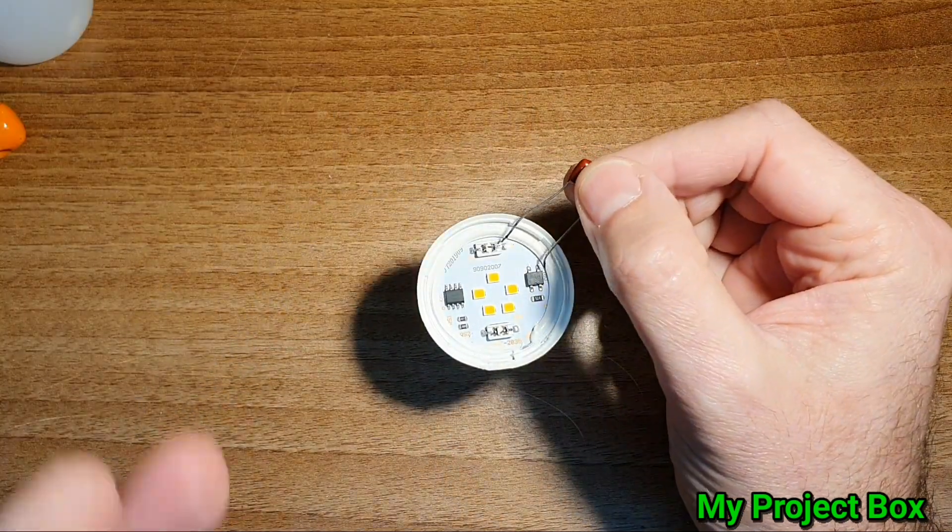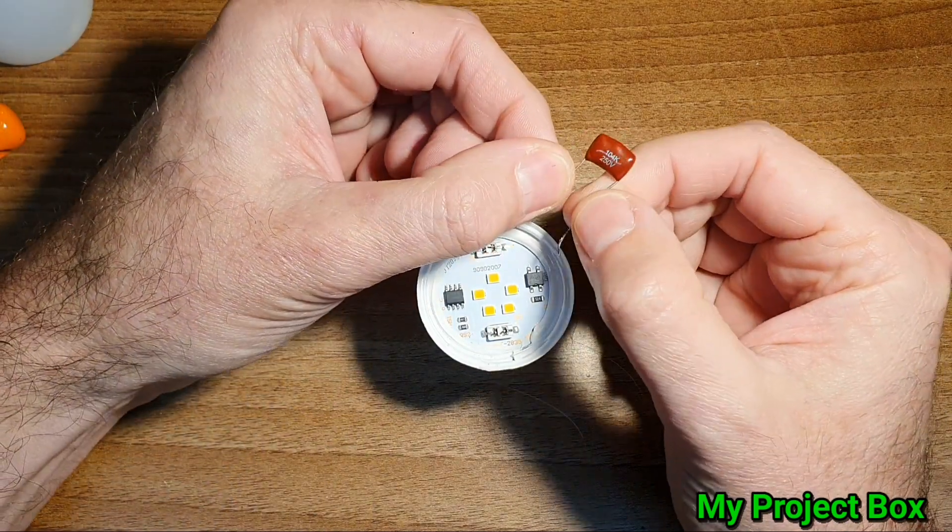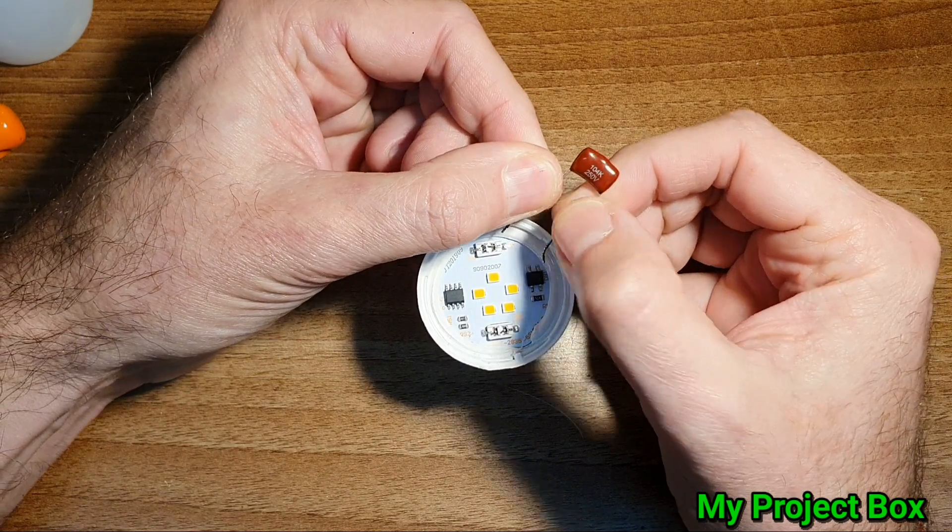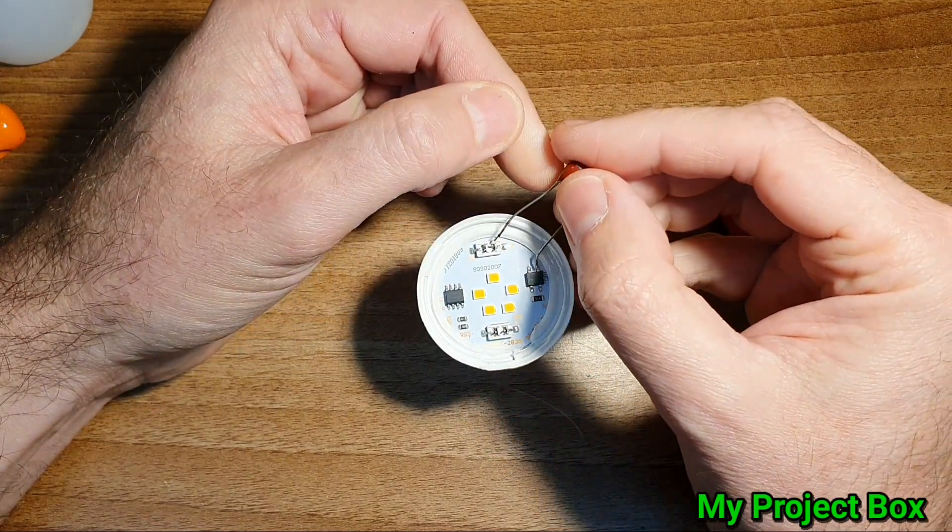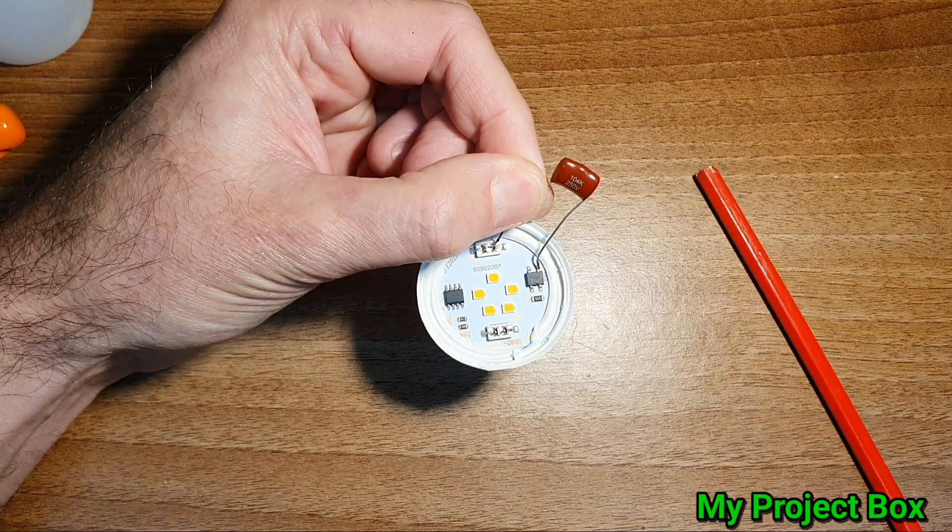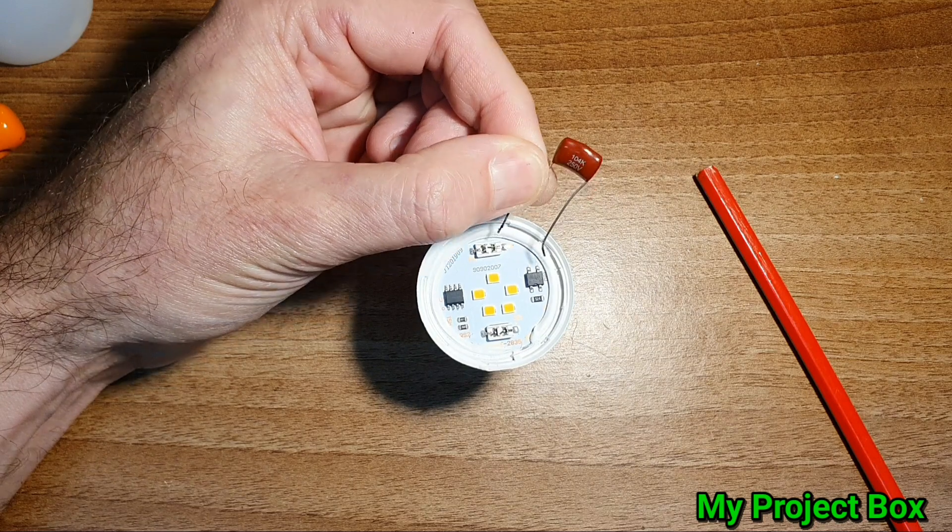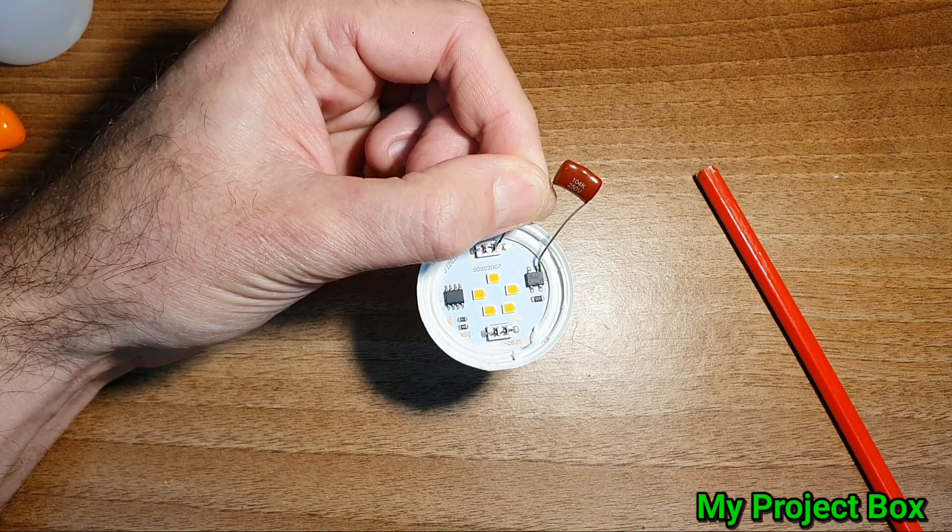A normal resistor would drop the voltage and generate some heat. But if you use a capacitor it doesn't do that. It just drops the voltage without generating any heat. So it's quite an efficient way of dropping the voltage to an LED bulb. It's used in lots of cheap LED lamps without generating all that heat and wasting energy.